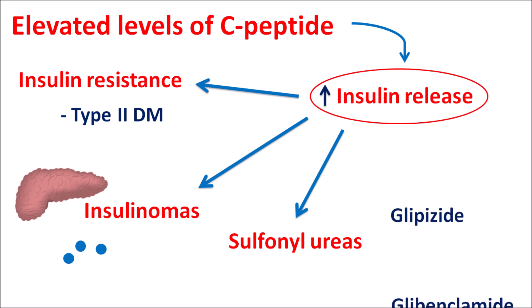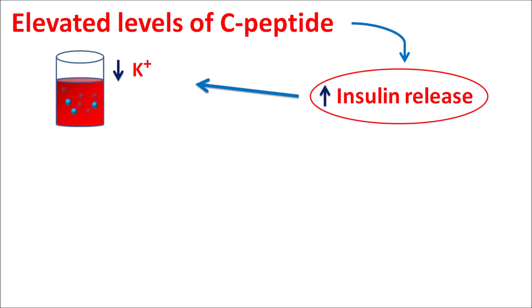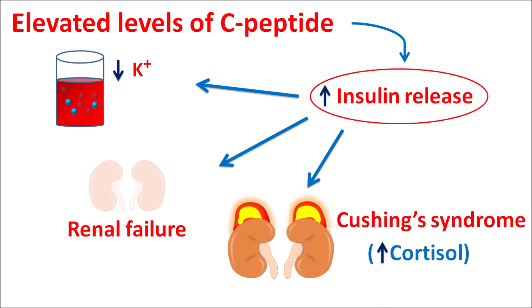Drugs like glipizide and glibenclamide, which are sulfonylureas, increase insulin release. When used excessively, they can increase C-peptide levels by promoting insulin release. Not only sulfonylureas, but incretin mimetics and DPP-4 inhibitors can all increase insulin release, elevating C-peptide levels. Other conditions such as hypokalemia, renal failure, or Cushing's syndrome, where excessive cortisol is released, all increase insulin synthesis, resulting in increased release of C-peptide.